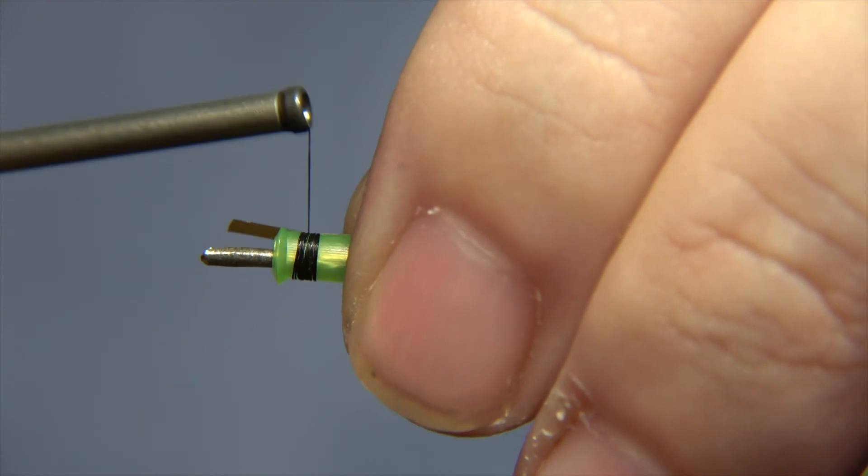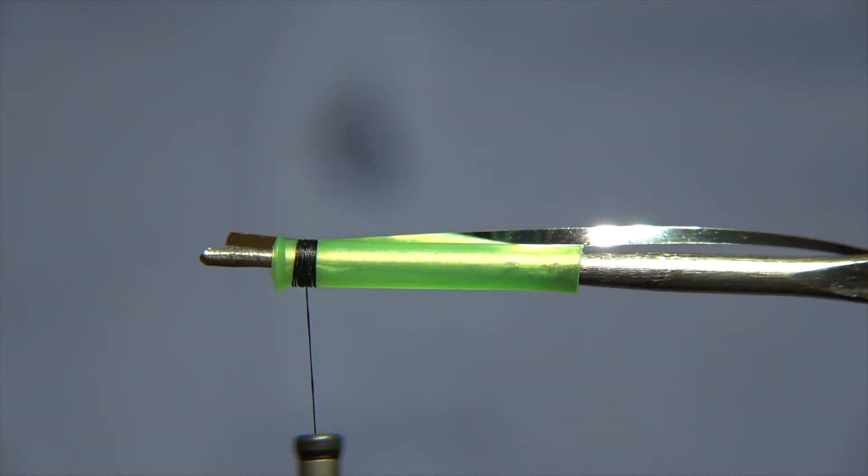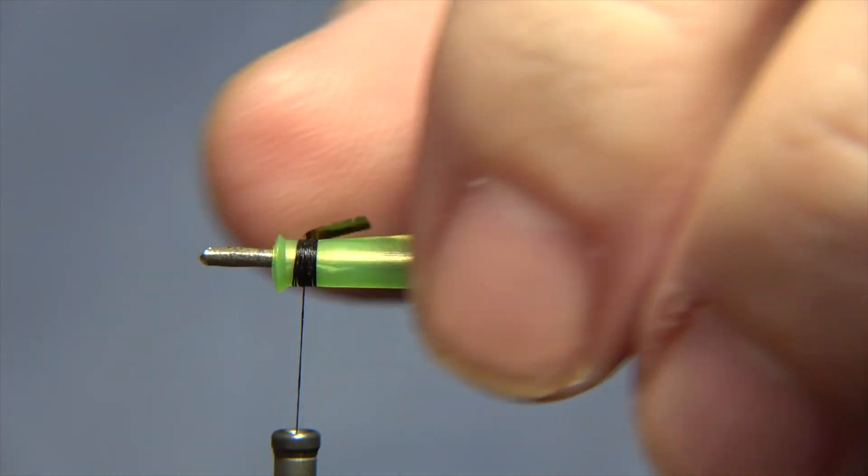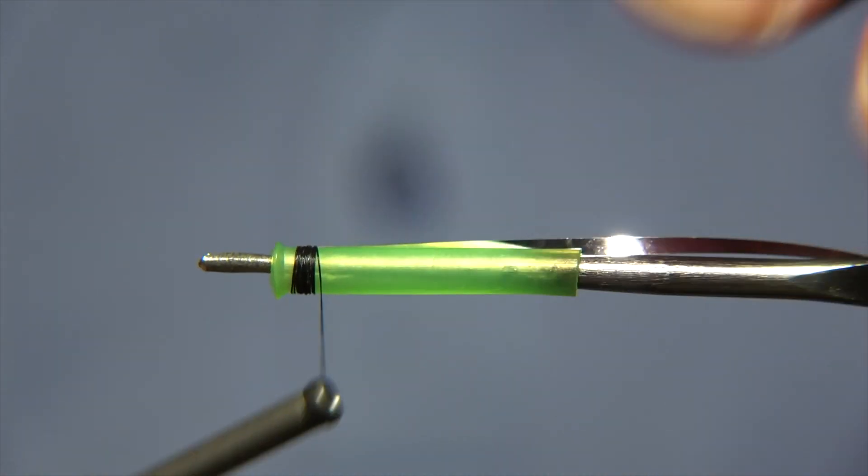But this tube I'm tying, I'm gonna put a silver body on it and this silver body is just made out of silver tinsel. I'm using a uni tinsel for this one.